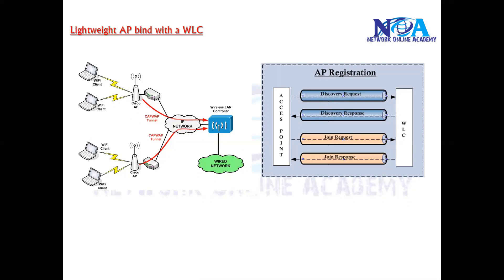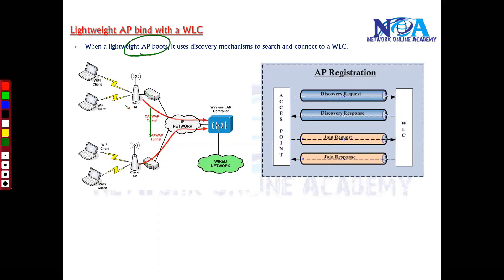Next, we'll try to understand how a lightweight access point binds itself with the WLC. We'll look at the process at the back end. Whenever you power on the lightweight access points — shown here — and they start booting, they will start the discovery process, using some discovery mechanisms in the back end to search and connect to the WLC.